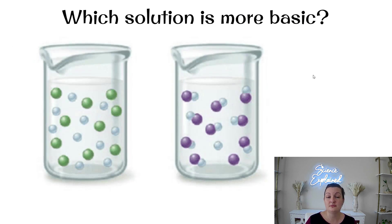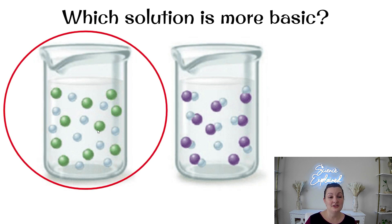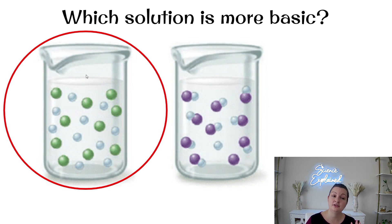So which solution is more basic? Pause your video and try this one. The more basic solution is the one that has fully dissociated — you can tell because the other one has only partially dissociated with just a couple of ions floating around, while the fully dissociated one has all of them.